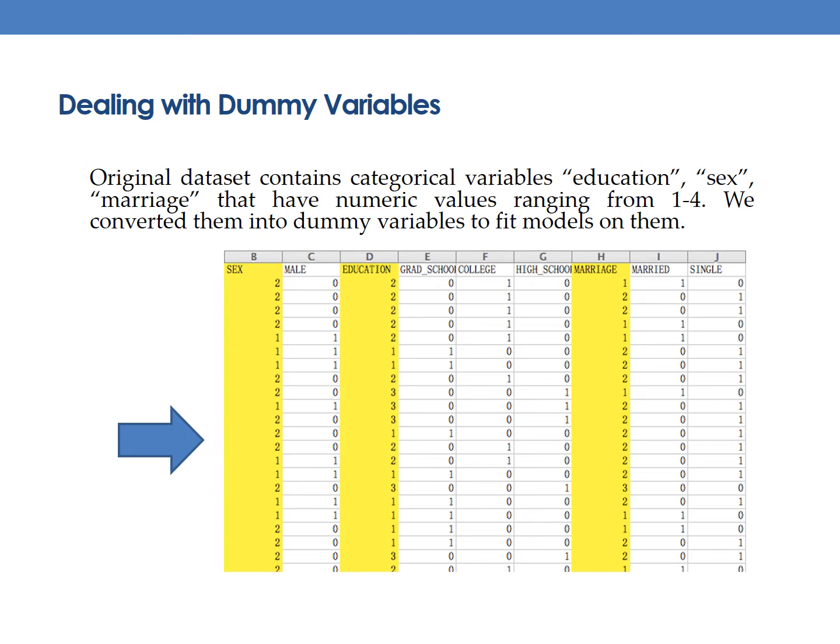If married has a value of zero and single has a value of 1, this client will be classified as single. If married has a value of 1 and single has a value of zero, this client will be classified as married. If both values are 0, this client will be classified as other.